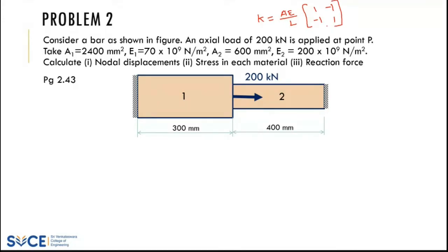We consider a bar problem with a stepped bar having different cross-sections, fixed on both sides, with a load of 200 kilonewtons applied at the center. Given are A1 and A2 (areas for each cross-section) and different Young's moduli. We are asked to identify the nodal displacement, stress, and reaction force.